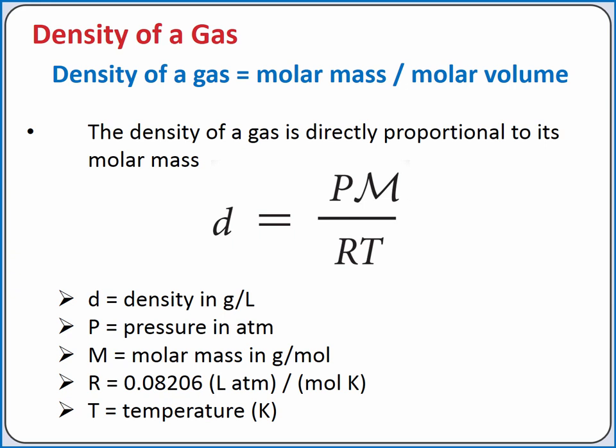We can calculate density as pressure times molar mass divided by the ideal gas law constant R and temperature. Density will have units of grams per liter when the molar mass is in grams per mole.